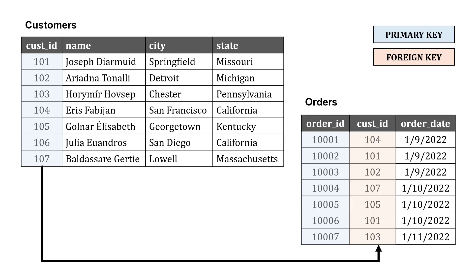We can also have a foreign key, which is basically using a primary key from another table to help provide additional context. For example, in the orders table, the order ID is the primary key because it helps us uniquely identify the orders. We also include the customer ID because it gives us more context and helps us understand who made that order. The foreign key could be listed more than once because a customer could have multiple orders, whereas a primary key should only be listed once.